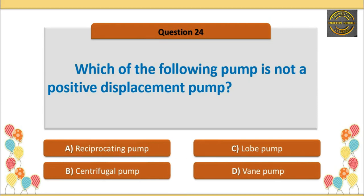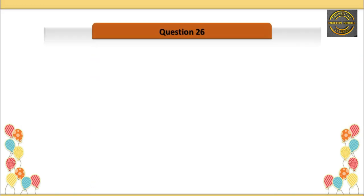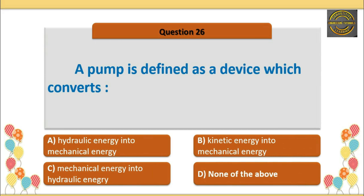Q24. Which of the following pump is not a positive displacement pump? Option B is correct: centrifugal pump. Q25. The vanes of a centrifugal pump move due to — option A is correct — power supplied by the prime mover. Q26. A pump is defined as a device which converts — option C is correct — mechanical energy into hydraulic energy.